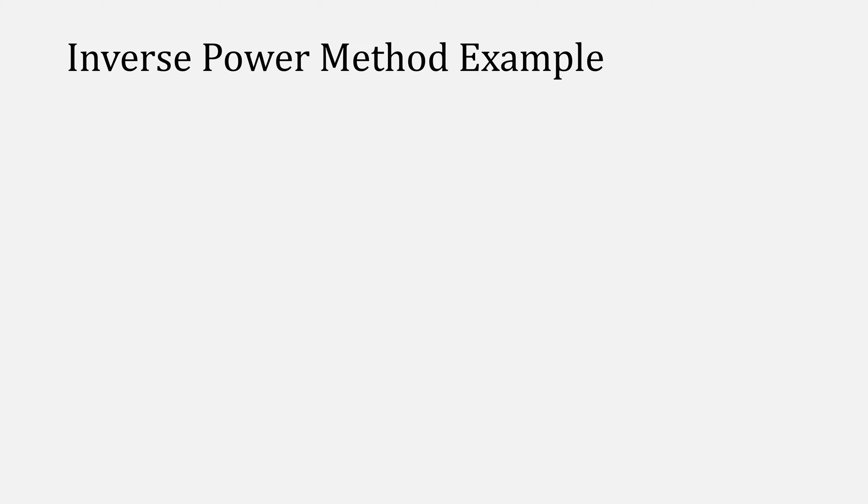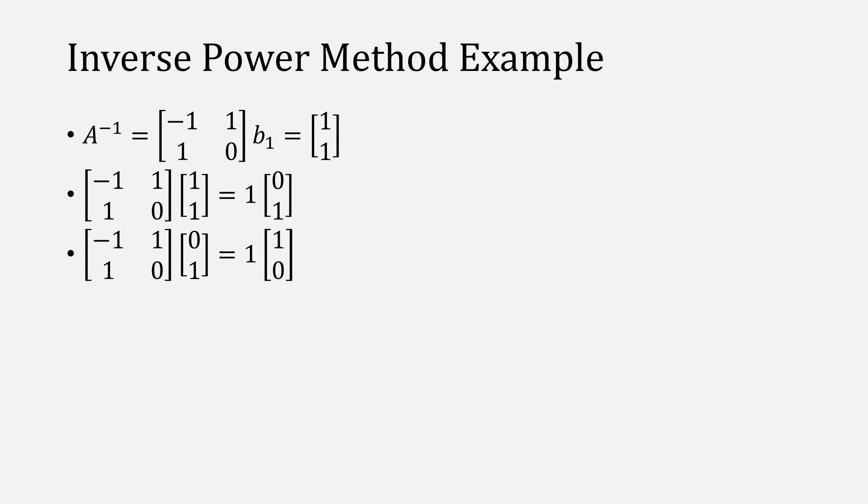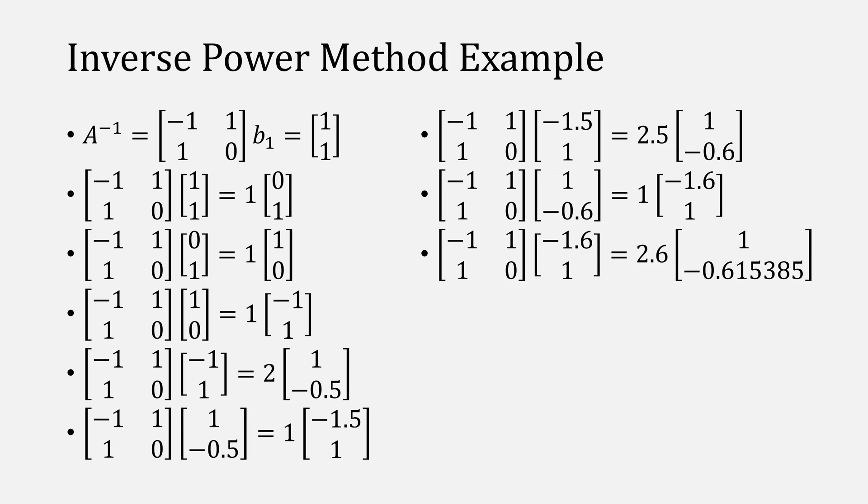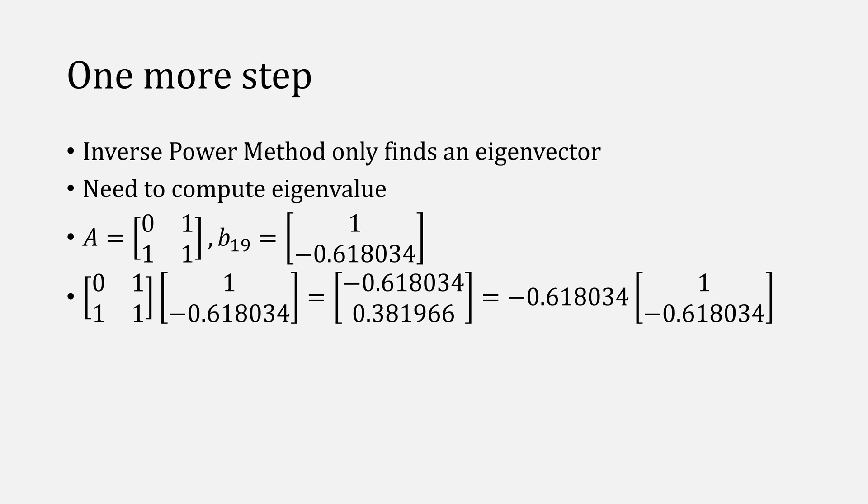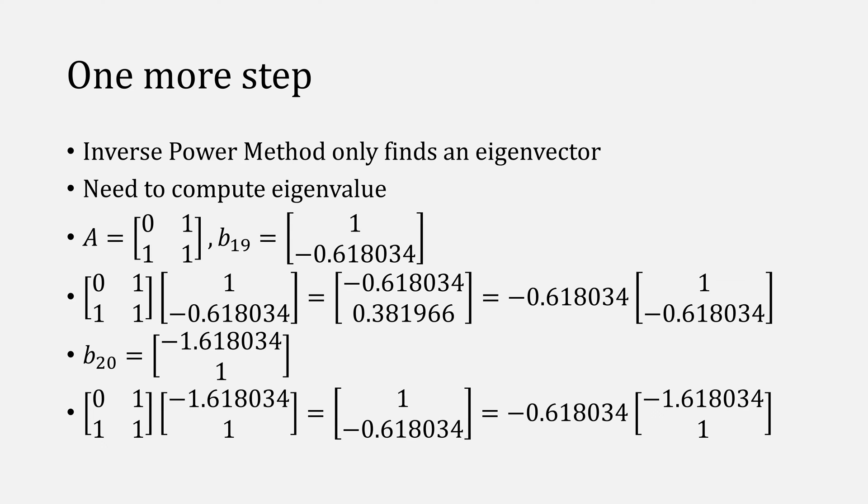So let's apply the power method to that inverse of matrix A, starting from the same vector of 1, 1. Multiply, factor out 1, multiply, factor out 1. Repeat the process, and then eventually this sequence actually starts to loop between two eigenvectors. Although we're not quite done, the inverse power method only finds an eigenvector. We still need to compute its corresponding eigenvalue, and the way you do that is simply to take our original matrix and multiply it by the eigenvector that we found. Then factor out the value to make it so that our eigenvector will equal itself. In this case, we factor out negative 0.618. You have to do the same thing for the other eigenvector that you found, and indeed this has the same eigenvalue.